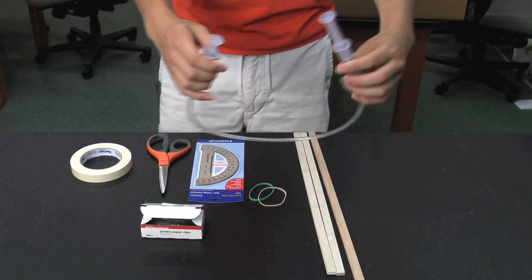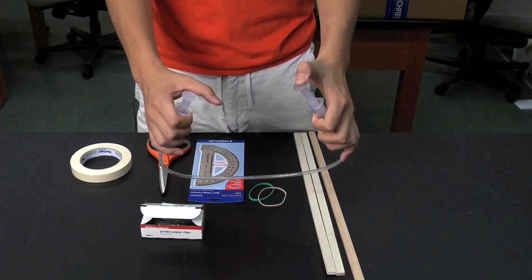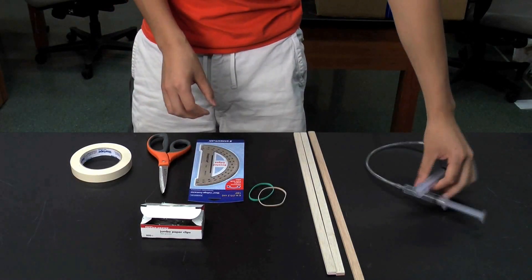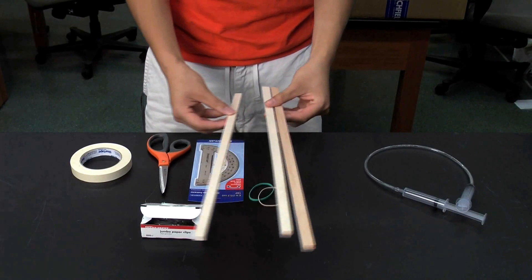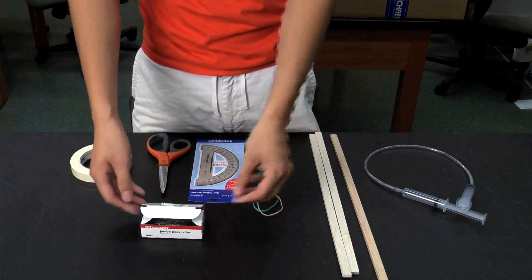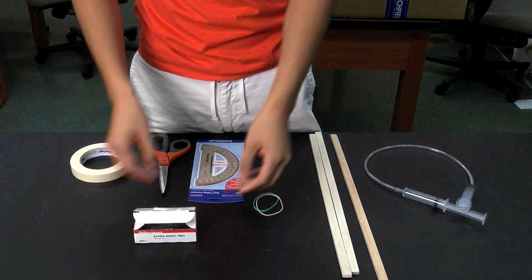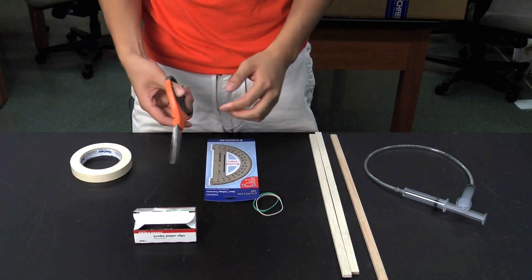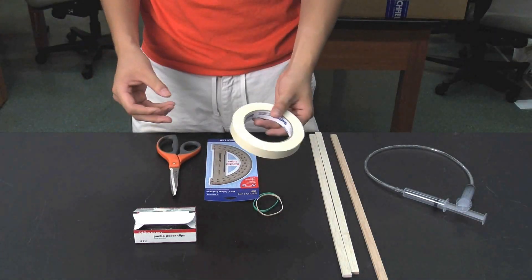Start with the systems built in the previous activity and make sure that they work. The class will also need some pre-cut balsa wood, rubber bands, paper clips, a protractor, scissors, and masking tape.